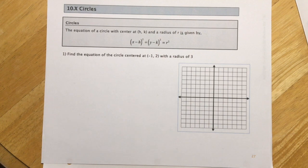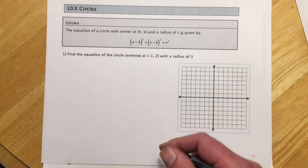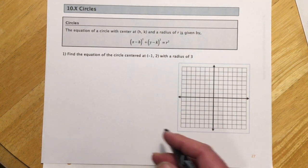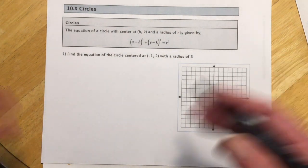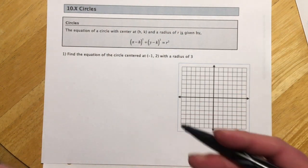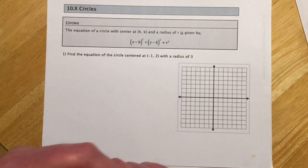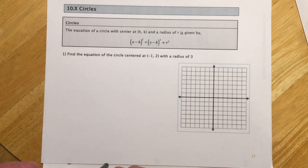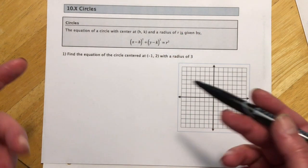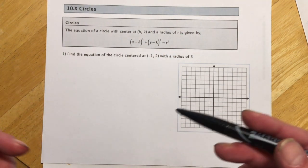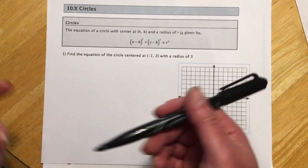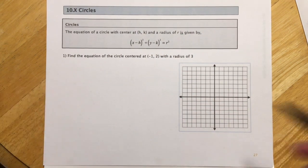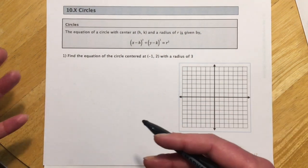Depending on how short the quarter is, sometimes I do the next section as an extra credit, sometimes as part of the course. Spring quarter is always very short, so if it's that one, this is probably extra credit. If I didn't cover it in class, then it was extra credit and wouldn't be on the exam; if I did cover it, then it would be on the exam and you would have had homework due on it.